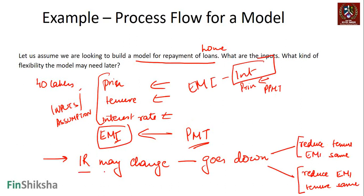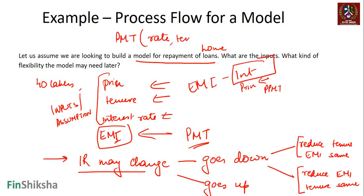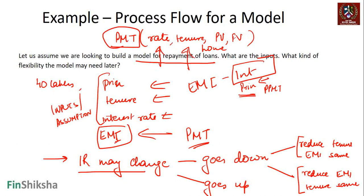Essentially, all I need to know is that if interest rate goes down, what could be the problems? If interest rate goes up, what could be the problems? And how do I model for those? Can I create these scenarios in my model? I have to leave all this open. If I just use the function PMT, putting in the rate, putting in the tenure, putting in the present value of the loan and future value of the loan, then I'll just get the EMI number.